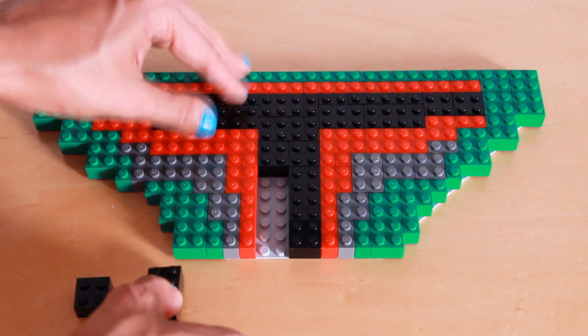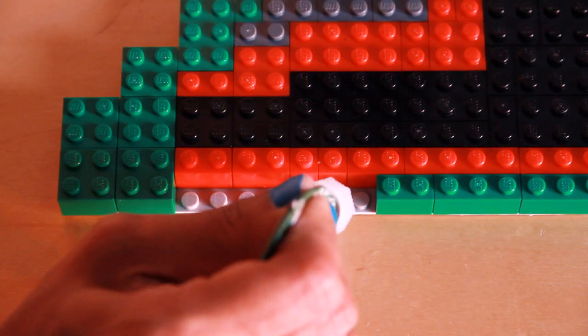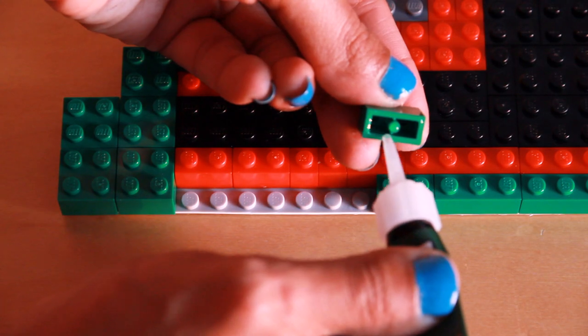Once you've arranged your Lego design, superglue it. Remove a few bricks at a time and add a small amount of glue to the plate and to the Lego itself.